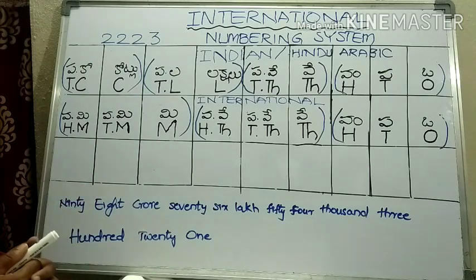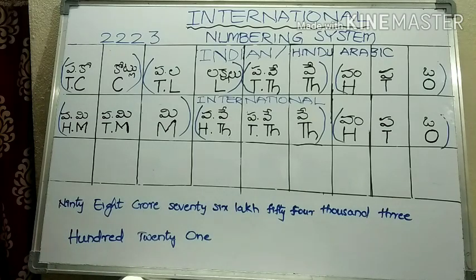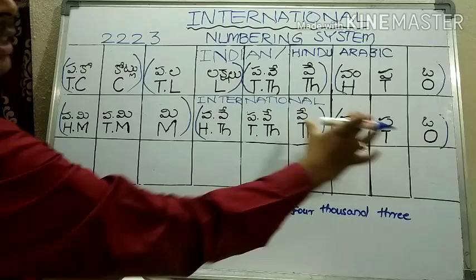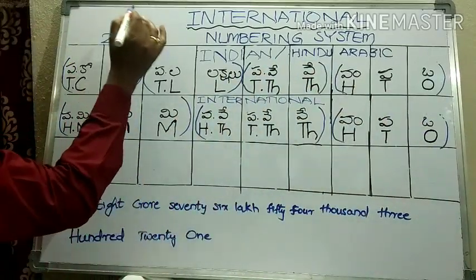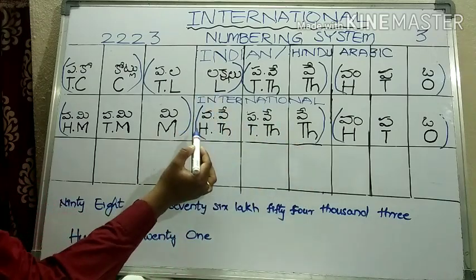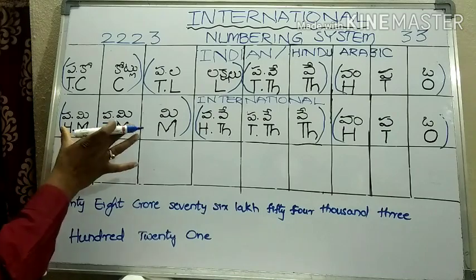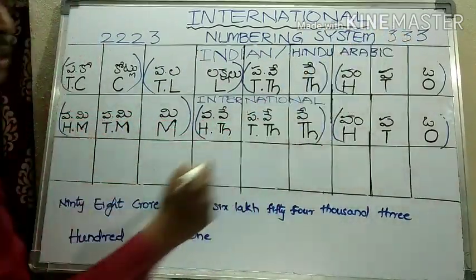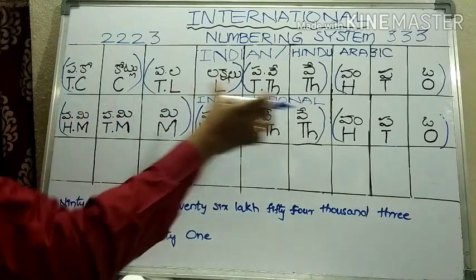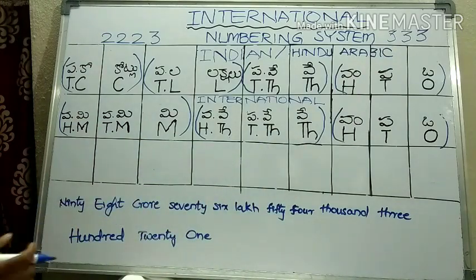In other countries, all follow the international system. What is the international system? In the international system, ones, tens, hundreds are the first group — three digits. Next, thousands, ten thousands, hundred thousands are another group of three. Then millions, ten millions, hundred millions are another group of three. So in the Indian system the pattern is three-two-two-two, while in the international system from right to left it is three-three-three.